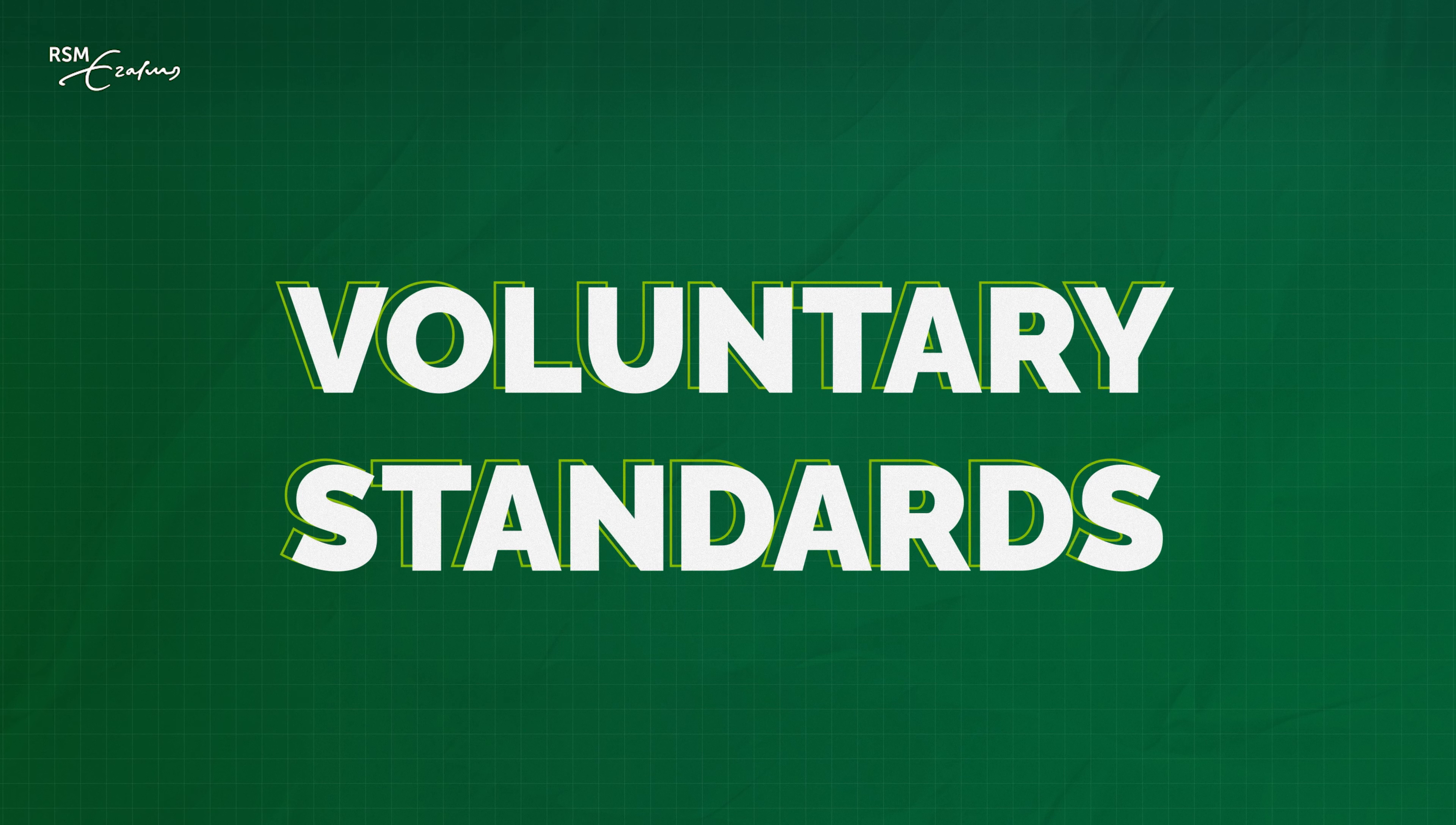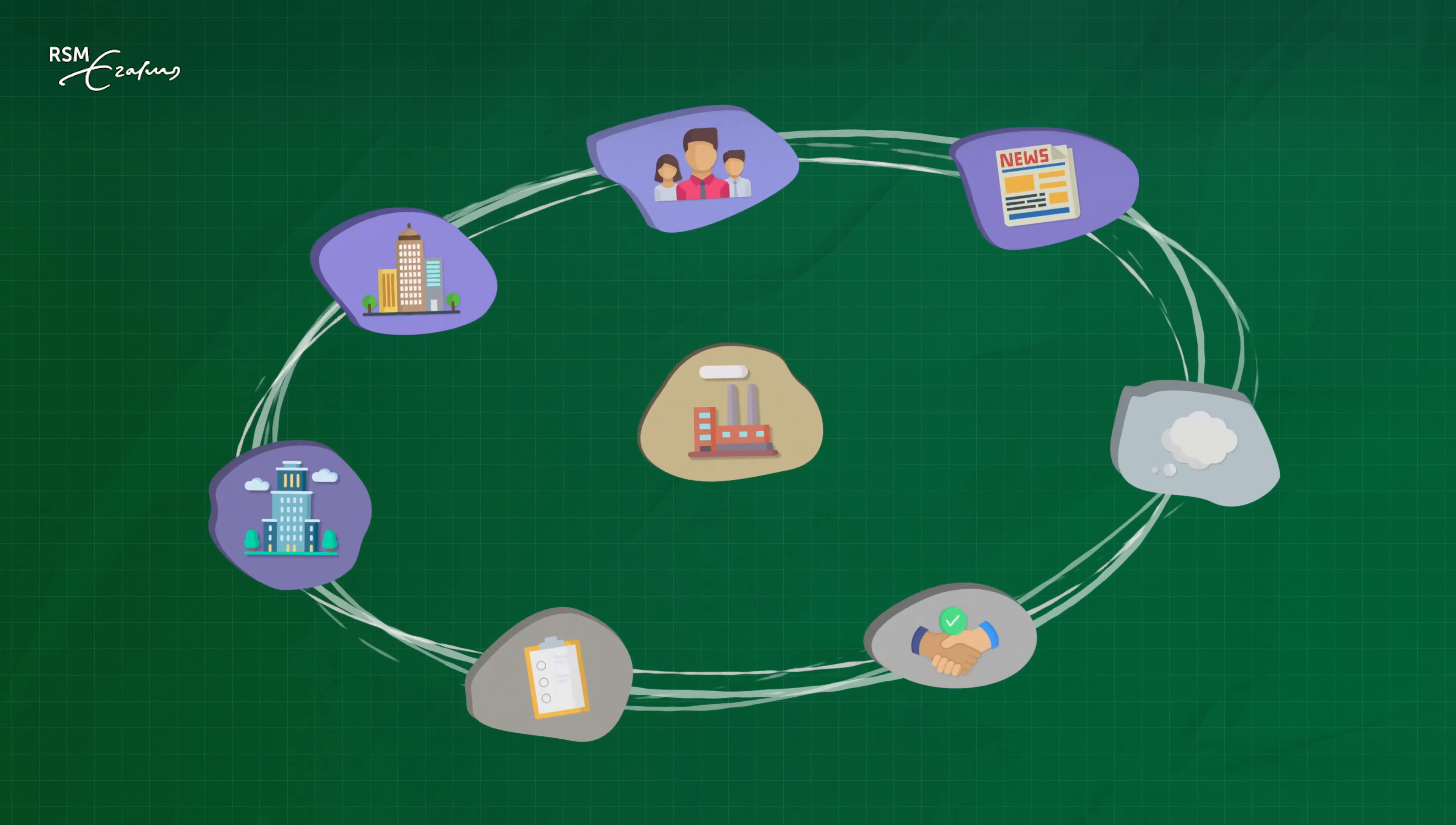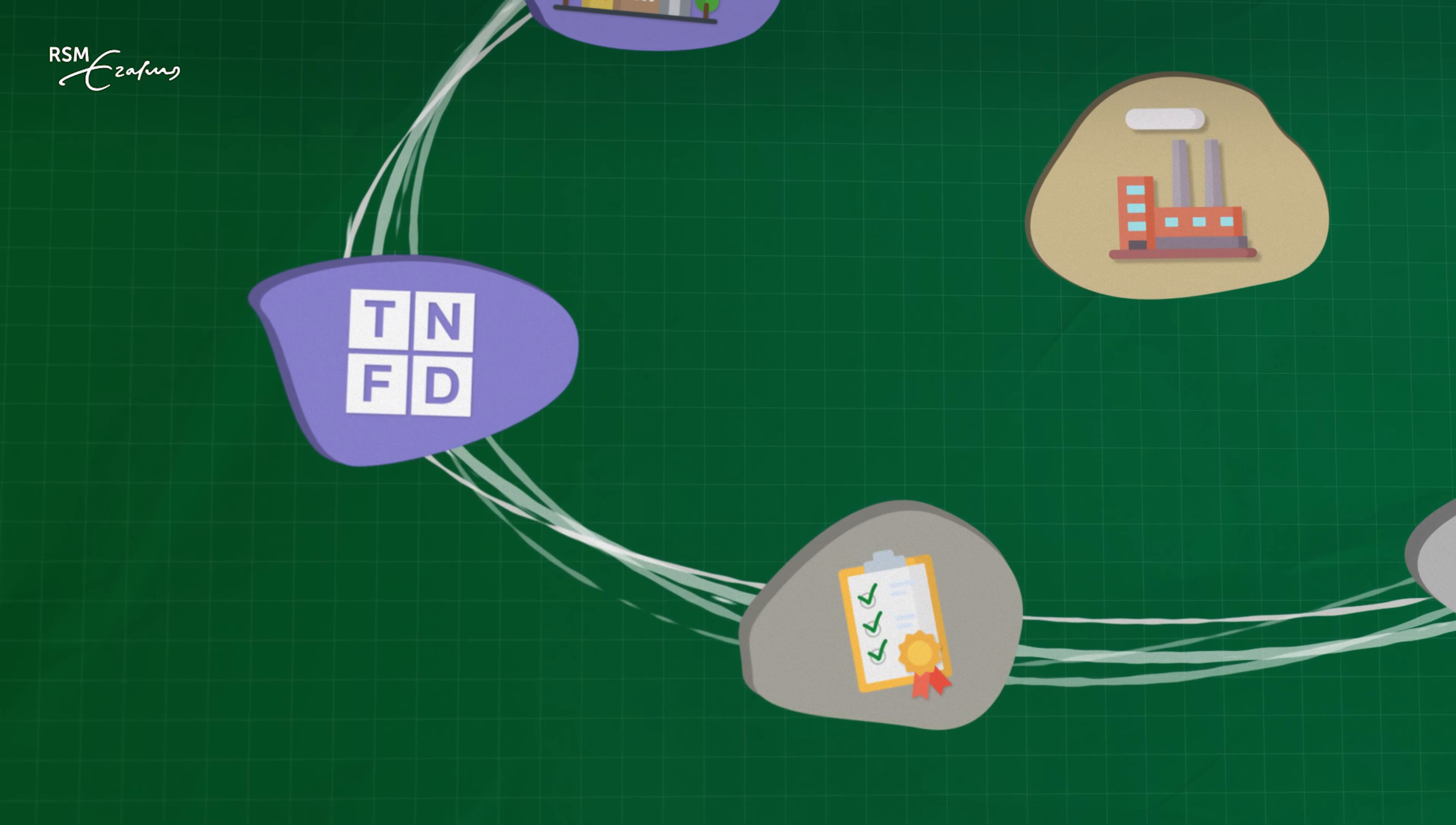A second tactic for field building is helping to establish voluntary sustainability standards. Voluntary standards include codes of conduct, certification standards, and reporting standards. Investors have played a major role in establishing such standards and have thereby reshaped the rules of the fields in which companies operate.